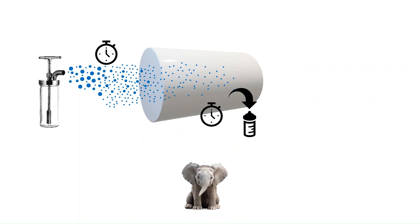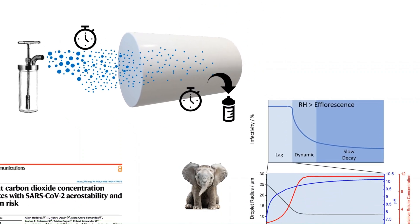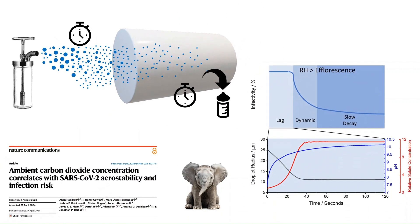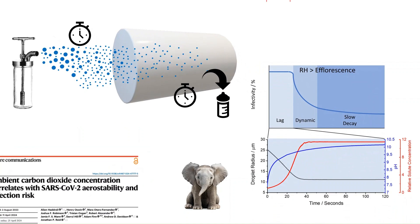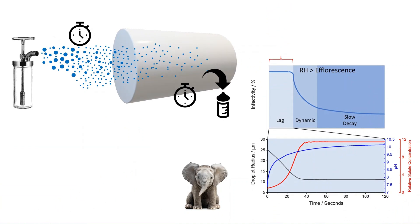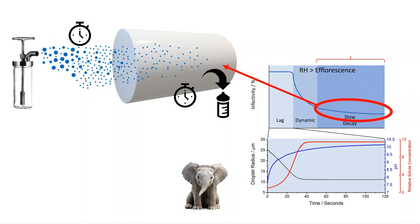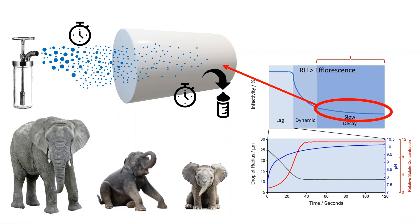Remembering the elephant analogy, what about the issue of time? We have recently reported that SARS-CoV-2 has a triphasic decay profile — meaning there's a region of time where there's no viral decay, followed by a region of fast decay, and finally a region of very slow decay. Given their physical limitations, rotating drums are largely measuring the decay rate in the slow decay region. And much like using a bathroom scale to measure the growth of an elephant, the rotating drum misses a significant portion of the lifetime of the virus.